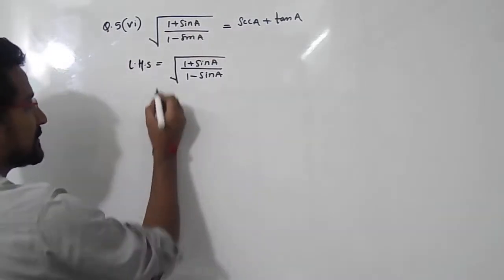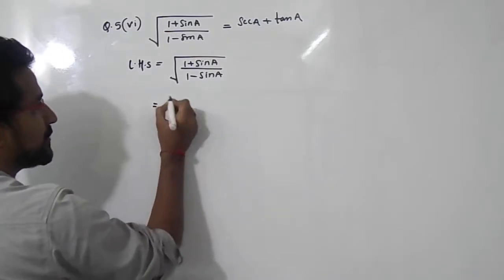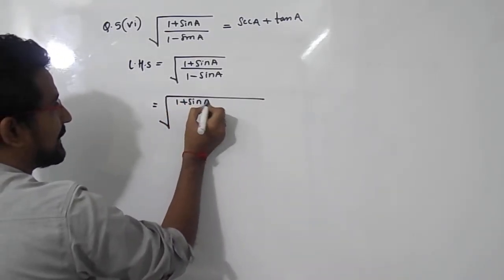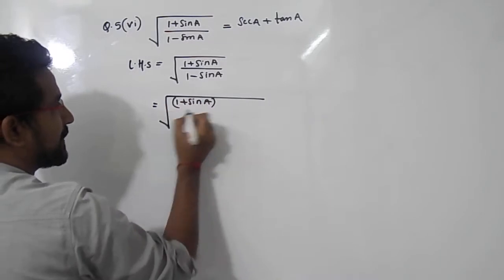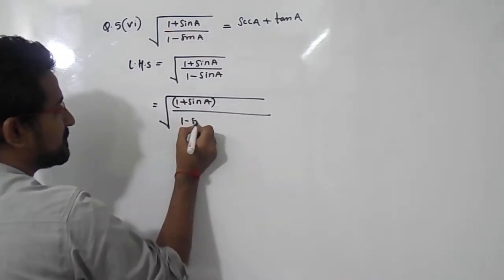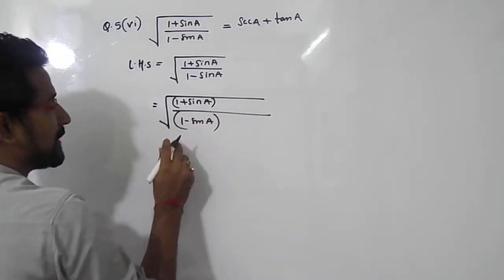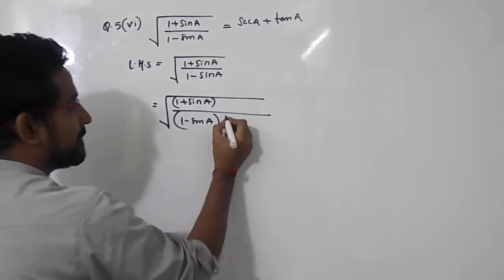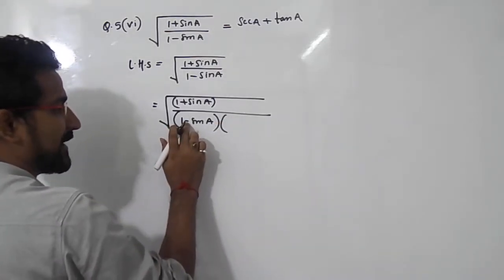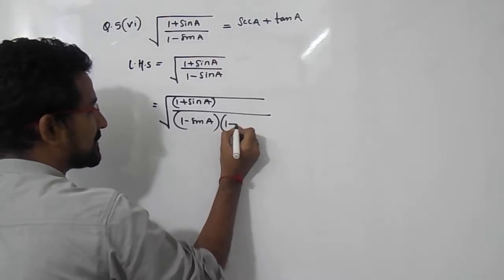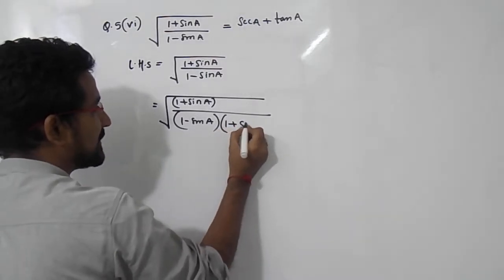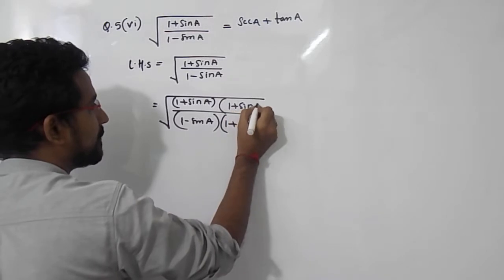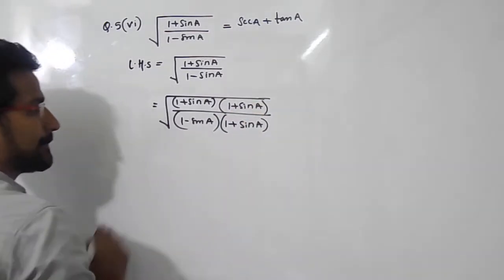So the same thing we are going to do here: it is (1 plus sin A) divided by (1 minus sin A). So in the denominator it is (1 minus sin A), so I will multiply it with its conjugate value. If it is minus, I will multiply it by plus, that is (1 plus sin A), and in the numerator also I will multiply it by (1 plus sin A).